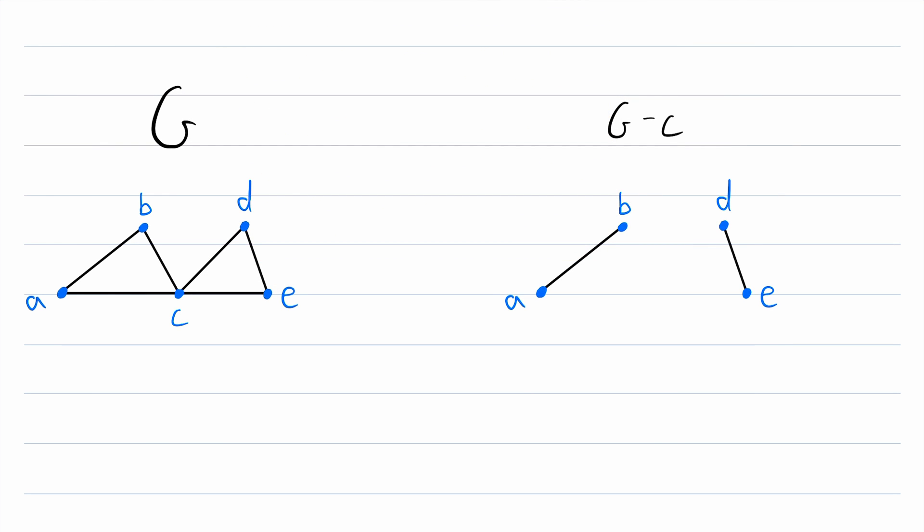Here's something else you might notice. How many components are in this original graph G? There's just one component, this component here. How many components are in the graph G minus C? Well, in this graph there are two components. So since deleting C from the graph G resulted in a graph with more components than the original graph had, we could say that C is a cut vertex. So that's just some fun terminology for you. If deleting a vertex results in a graph that has more components than the original graph, then that vertex is called a cut vertex.